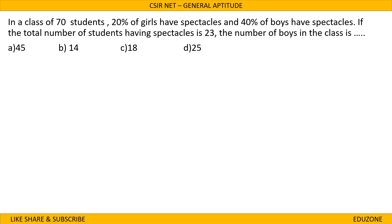This is a session on general aptitude. First question: in a class of 70 students, 20% of girls have spectacles and 40% of the boys have spectacles. If the total number of students having spectacles is 23, the number of boys in the class is to be found. The total number of students is 70.